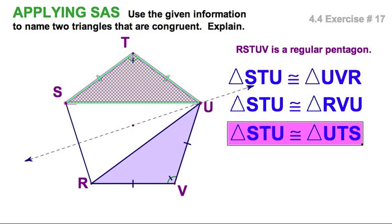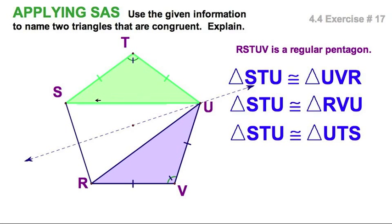We could continue this argument. We could find so many. For example, over here, I can say STU is congruent to its reflection, its own reflection UTS. And that would be by, again, side-angle-side.